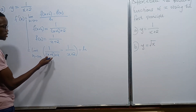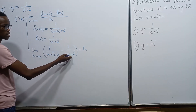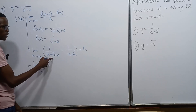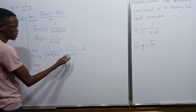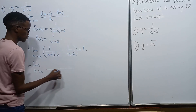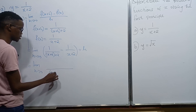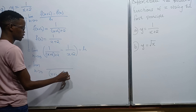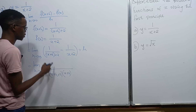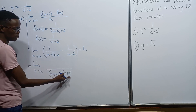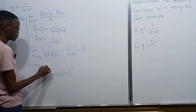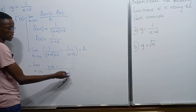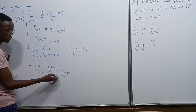We can make a single fraction of everything in the brackets. The common denominator is going to be (x plus h plus 2)(x plus 2). Dividing the first denominator into this gives us x plus 2, and times 1 we have x plus 2. Dividing the second denominator cancels, leaving us with x plus h plus 2.